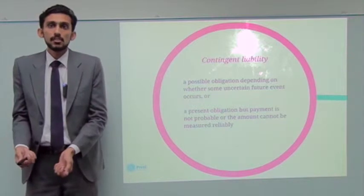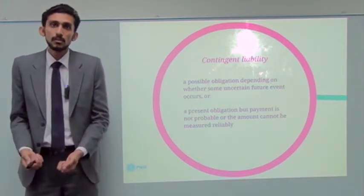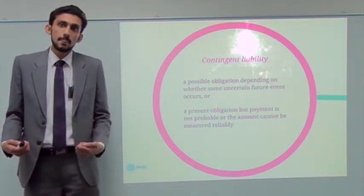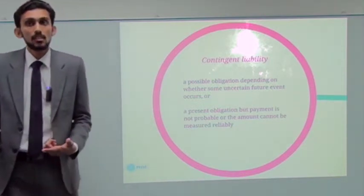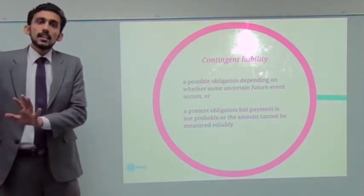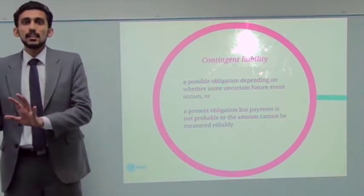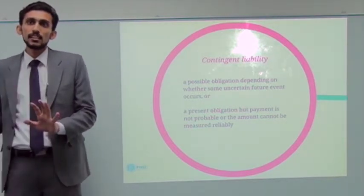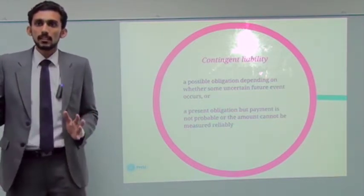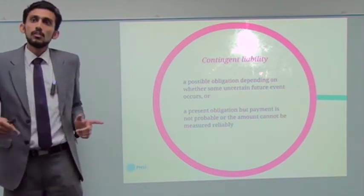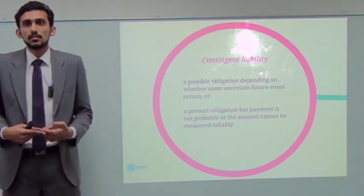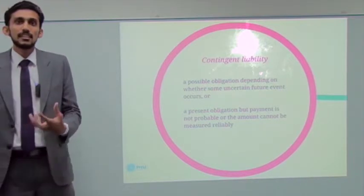For example, you may have an obligation in a court case where damages are claimed against you, but you are not sure how much you will need to pay or the probability that you will pay. Or the obligation may depend on events not within your company's control — such as a financial guarantee given to a bank on behalf of another person: if they don't pay, you will. Their bankruptcy is not within your control, so these are possible obligations.